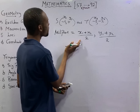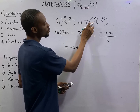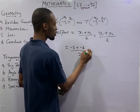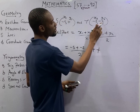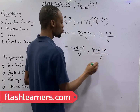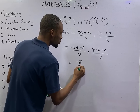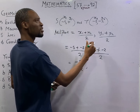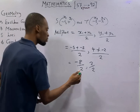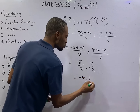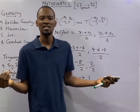Now this becomes: X1 is -5, so -5 plus X2 which is -3, that is X1 + X2 = -8, over 2. Then Y1 is 4, plus Y2 which is -2, so 4 + (-2) = 2, over 2. This gives us -8/2 = -4, and 2/2 = 1. So the midpoint is (-4, 1), as seen in option C. That is it — you have answered this question.